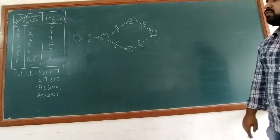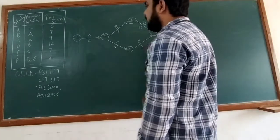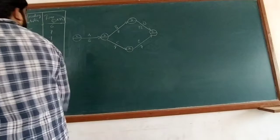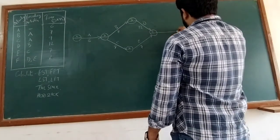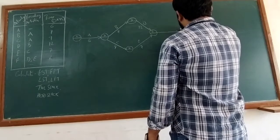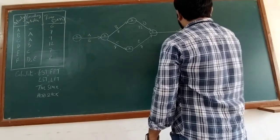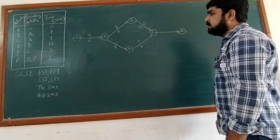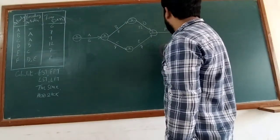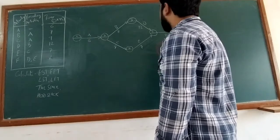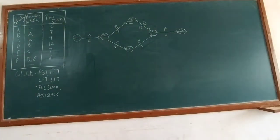We number the merge node as 5. The last activity is activity F, which has its ending node numbered 6. Activity F requires 8 days to complete.